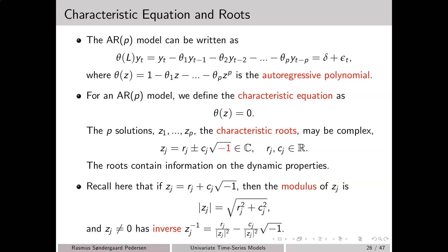Some of you may already be familiar with complex numbers. We will recall a few important properties. If we have some complex number z_j, then we have the so-called modulus of z_j — you may think of this as the absolute value — given by the square root of r_j squared plus c_j squared. Moreover, we may also consider the inverse of z_j, denoted z_j to the power of minus 1, given by the following equation.